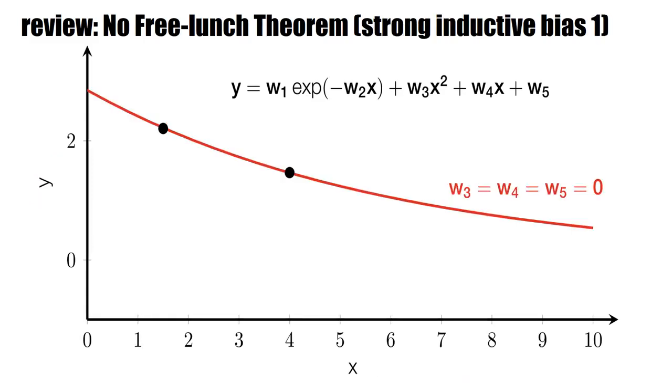Now, what helps is if we know that three of the parameters are zero in this task. This is an example of a strong inductive bias. Now we have two data points as before, and we are left with two parameters. We can actually fit the curve. We can fit the two data points and extract a very nice curve.